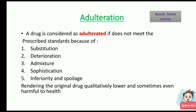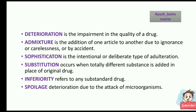Adulteration: a drug is considered adulterated if it does not meet prescribed standards because of substitution, deterioration, admixture, sophistication, inferiority, or spoilage, rendering the original drug qualitatively lower and sometimes even harmful to health. Deterioration is impairment in the quality of a drug. Admixture is the addition of one article to another due to ignorance, carelessness, or by accident. Sophistication is intentional or deliberate adulteration. Inferiority refers to any substandard drug. Spoilage is deterioration due to attack of microorganisms.